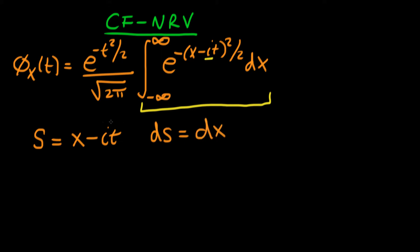Because t is just a parameter, it's constant when we're integrating, so we just got ds equals dx. The only other thing we need to change about this integral are the limits. The upper limit s_upper is actually going to be equal to infinity minus it, because I've taken my x value infinity and I've taken off it.